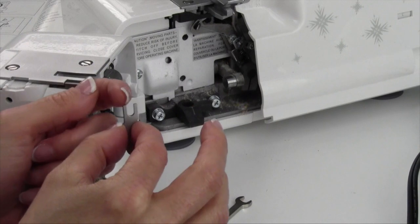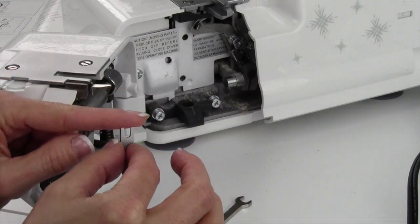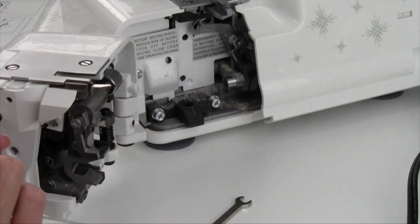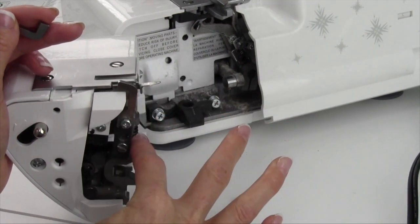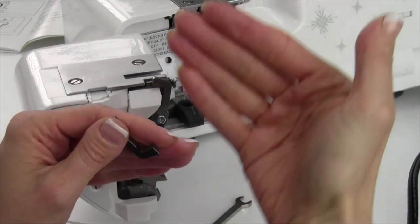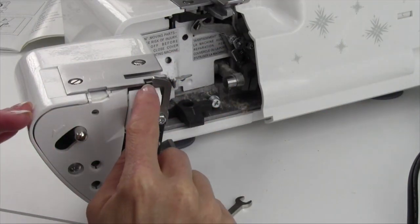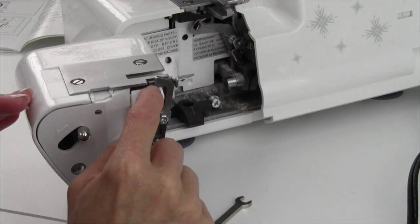As you put this on, you're going to notice you can actually tighten it anywhere within this area. What you're looking for is when you bring it back and your blade is in the lowest position, the cutter needs to be about a half of a millimeter below the other one. Mine actually looks like it's a little bit further than that.